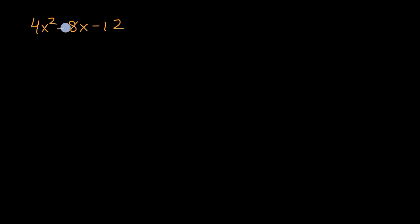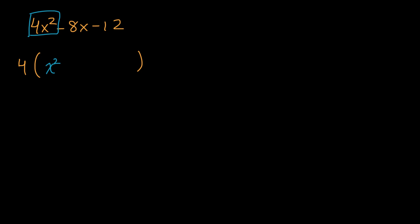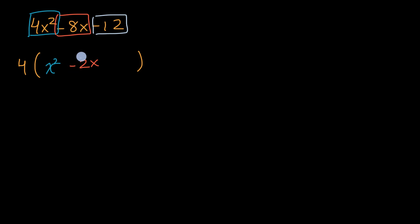So what I want to do is factor out a four. I could rewrite this as four times — four times what? If I factor a four out of four x squared, I'm just going to be left with x squared. If I factor a four out of negative eight x, negative eight x divided by four is negative two, so I'll have negative two x. And if I factor a four out of negative 12, negative 12 divided by four is negative three.